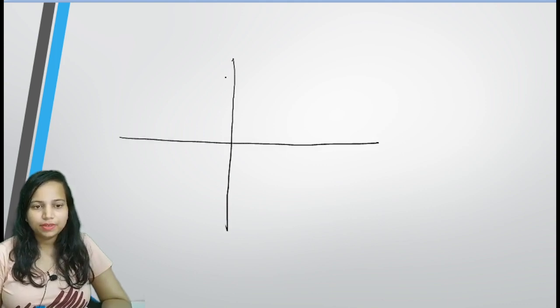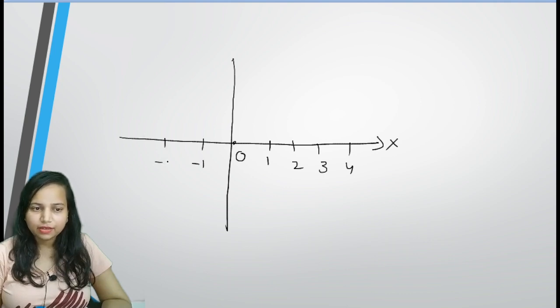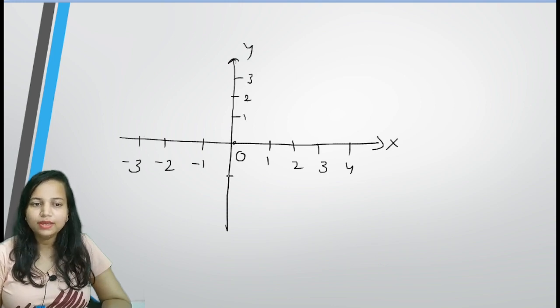Yahan par maine ek blank slide liya hai. Main aapko samjha rahi hoon ki abscissa, ordinate kya hote hain, quadrants kaise hote hain, coordinates kaise find out karte hain. Maine yahan par ek plane draw kiya — yeh origin hai, yeh x-axis hoti hai. Idhar x-axis ke plus points hain, yeh x-axis ki negative side hai. Yeh y-axis hai — upar ki taraf points positive honge, aur niche ki taraf negative.